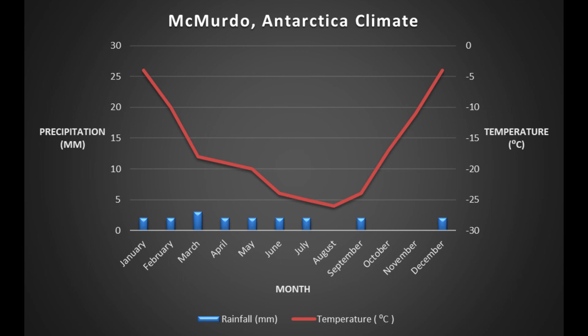The precipitation is minimal throughout the year, with March having the highest of around three millimeters. August, October, and November see no precipitation at all.